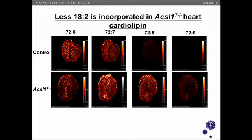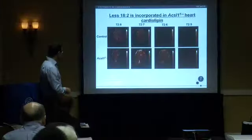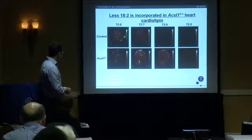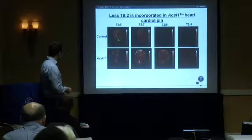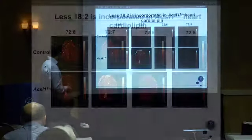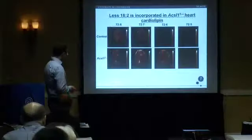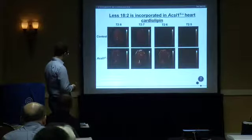This is a MALDI image to provide a little visual context. In the control condition you can see the tetralinoleoyl cardiolipin in a heart slice — the heat map intensity increases with cardiolipin abundance. There's about an 80% decrease in cardiolipin in the ACSL1 knockout, along with a shift toward more saturated species.